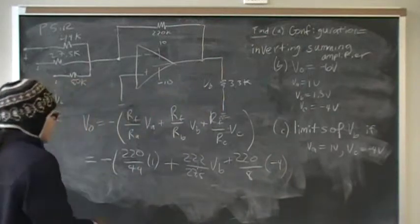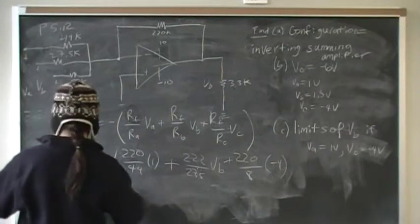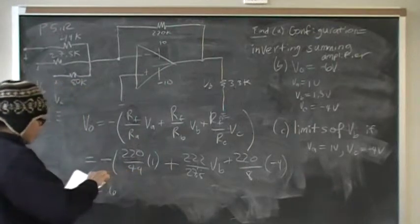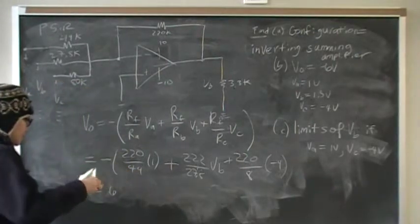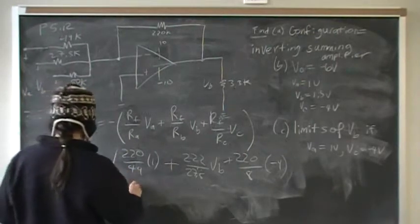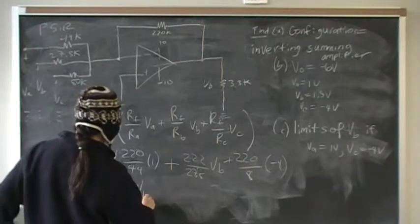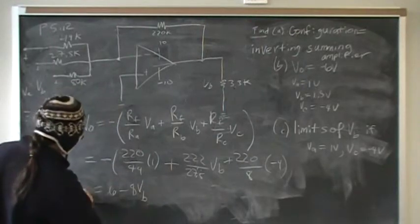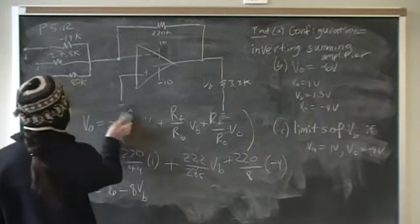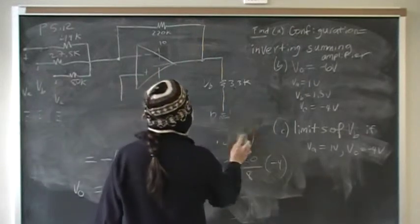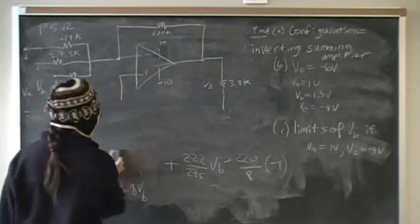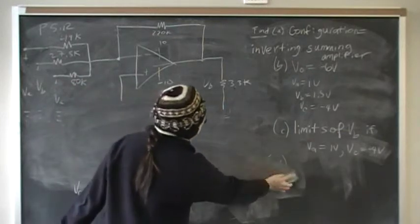When you simplify this, it reduces to the equation 6 - 8Vb = Vout. Now we solve for the two possibilities, the two points of saturation.